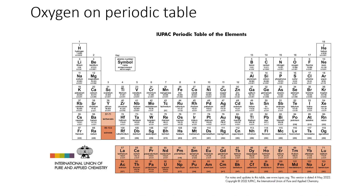Looking at the periodic table again: carbon can have -4, -3; oxygen has -2; and the next column has -1. You can see how the periodic table helps you identify charges and also shows you atomic number and mass.